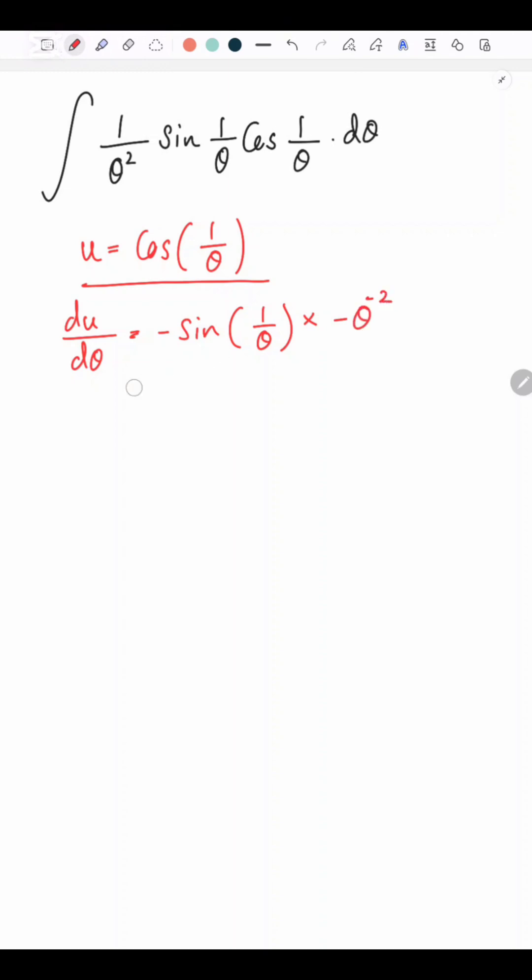So it's going to be minus theta to the power minus 2. So du over d theta equals sine 1 over theta over theta squared. So theta squared over sine 1 over theta dot du equals d theta.